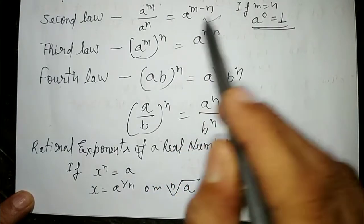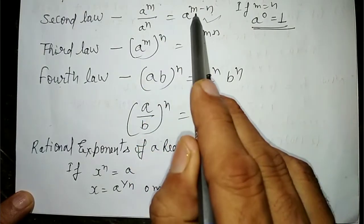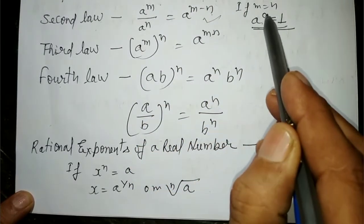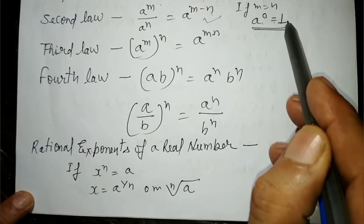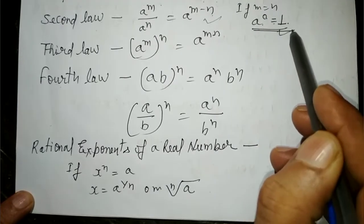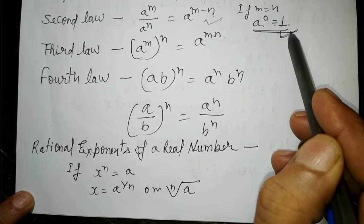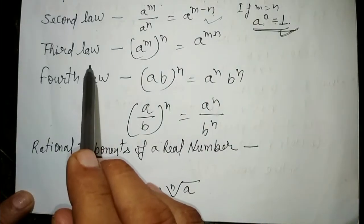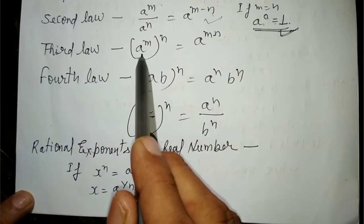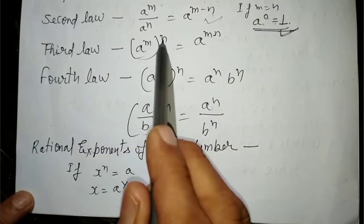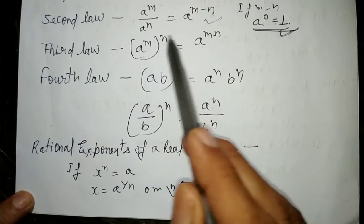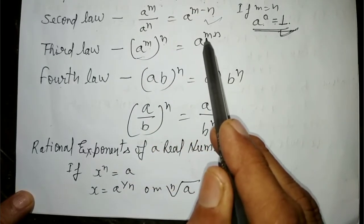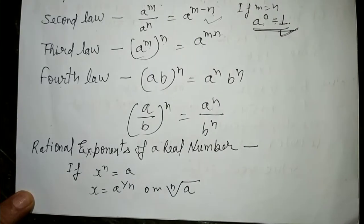अगर यहाँ पर m और n की value same हो तो a to the power zero is equal to one होता — ये भी एक formula है, इसको लिख लेंगे और learn कर लेंगे। Third law: a to the power m whole power n is equal to a to the power mn — power के ऊपर power होती तो power का multiply हो जाता है।